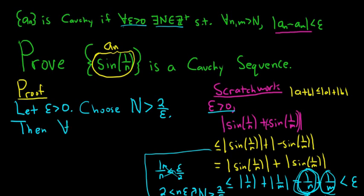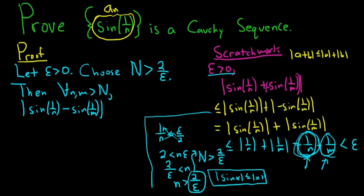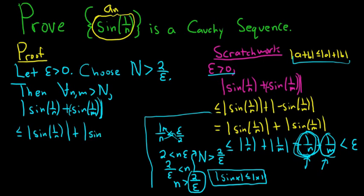Then for all little n and little m bigger than capital N, we look at the absolute value of sine of 1 over n minus sine of 1 over m. Using the triangle inequality — think of this as plus negative — this is less than or equal to the absolute value of sine of 1 over n plus the absolute value of sine of 1 over m. Using the identity |sin x| ≤ |x|, this is less than or equal to 1 over n plus 1 over m.